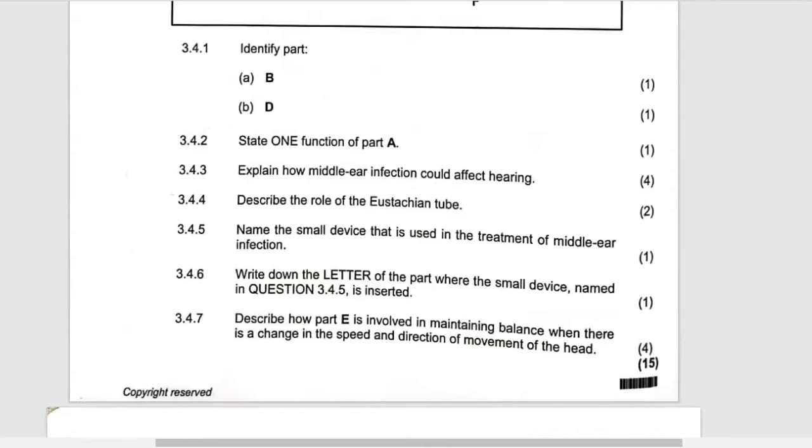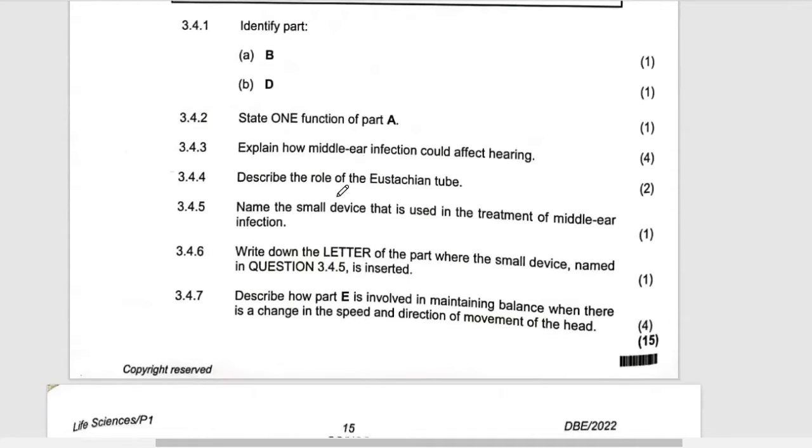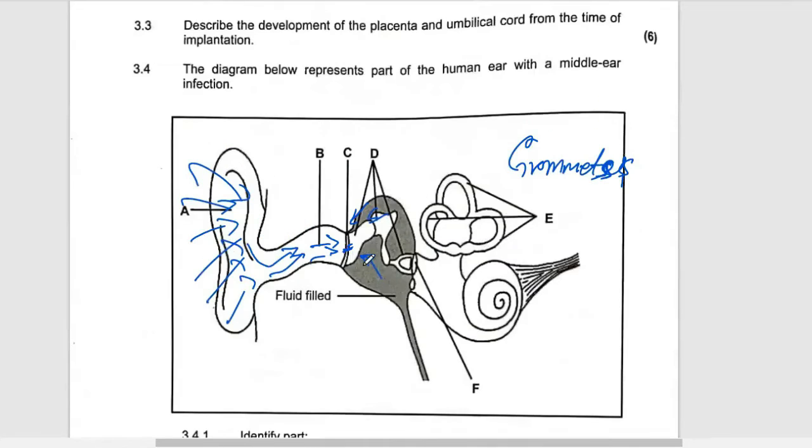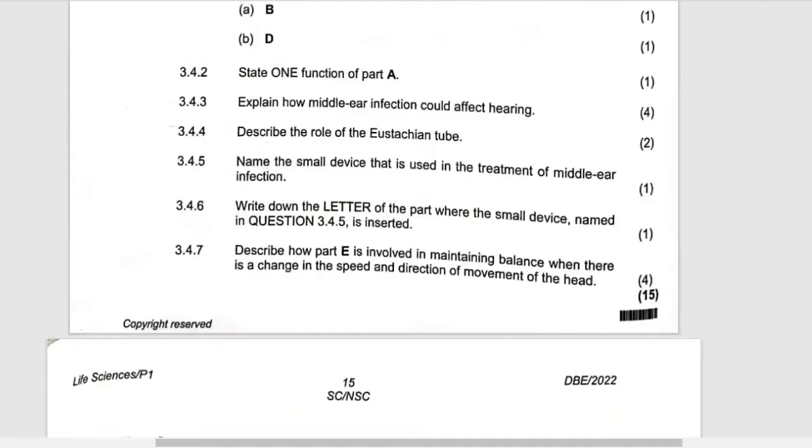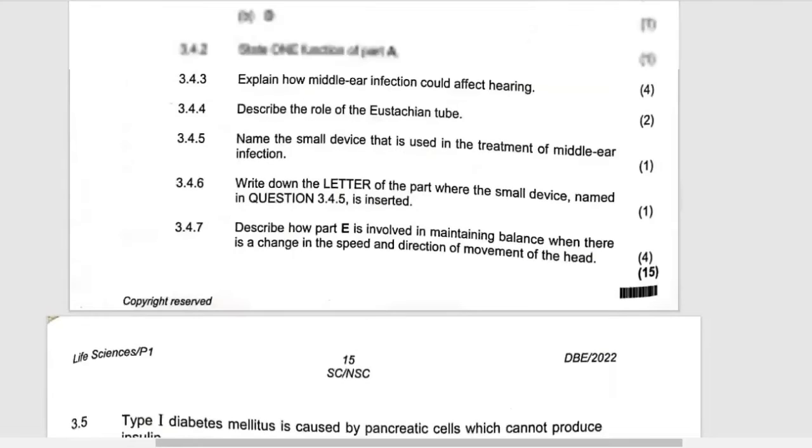Then they are saying that, oh, I've skipped one question. Describe the role of Eustachian tube. The role of Eustachian tube. Remember Eustachian tube connects to the mouth. So what is the function of the Eustachian tube? The function of the Eustachian tube is to equalize the pressure on the either side of the tympanic membrane. So this is the Eustachian tube which connects to the mouth is to equalize the pressure on the either side of the tympanic membrane.